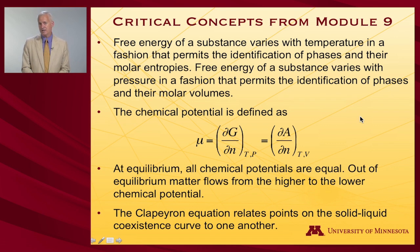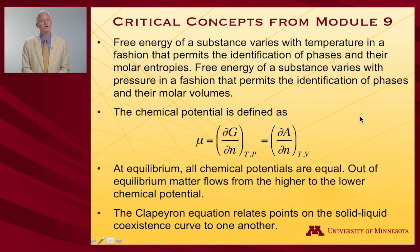When we have phases in equilibrium with one another, all the chemical potentials in all the different phases are equal to one another. If they are out of equilibrium, matter will flow from the higher to the lower chemical potential.